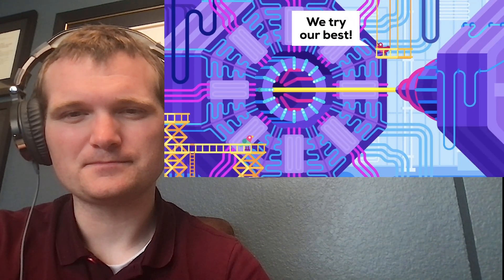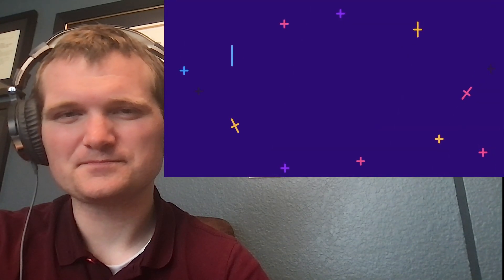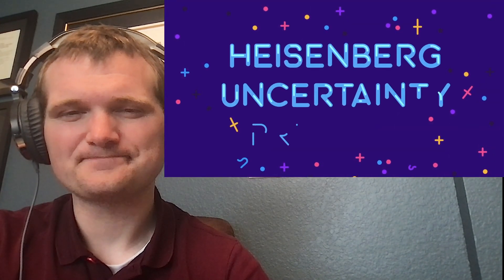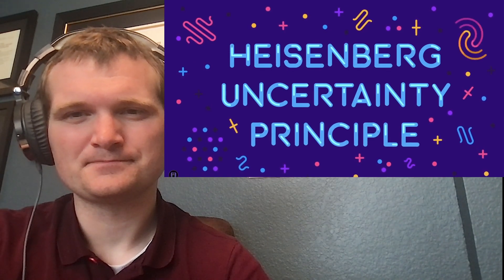By looking at a particle, we change it. In quantum physics, we cannot know where a particle is and where it's going with absolute precision. This fact is so important that it has a name. The Heisenberg Uncertainty Principle, the basis of all quantum physics.